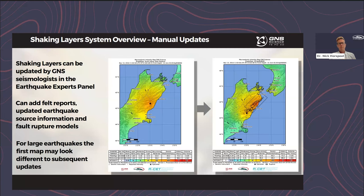Shaking Layers can change over time, and we really want to highlight that particularly for large or significant events, the first map produced could change with subsequent updates. An example here is the Kaikoura earthquake in 2016 — showing on the left what the first map may have looked like when we just have the location of the epicenter, and on the right what a subsequent map looked like when we have information on the fault rupture and strong motion data. You can see that the distribution of shaking changes — for example the shaking in Christchurch is less intense in the updated map, while shaking in the upper South Island and Wellington region is higher. Always accessing the latest version will provide the best information available.